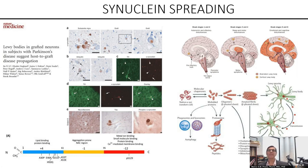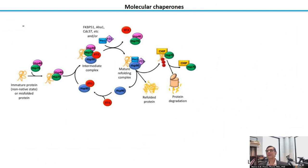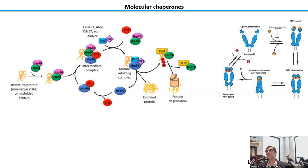Somehow these proteins that normally help brain cells communicate change, misfold, form inclusions, and can transfer from neuron to neuron, spreading through connected pathways. One possibility is that proteins named molecular chaperones participate in this process. Molecular chaperones are involved in folding and organization of large protein complexes — the best example being the heat shock protein 90 (HSP90) chaperone pathway. These molecular chaperones help maintain proteins folded, but can also support their degradation.